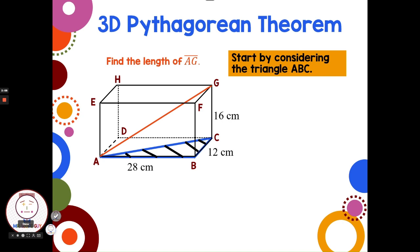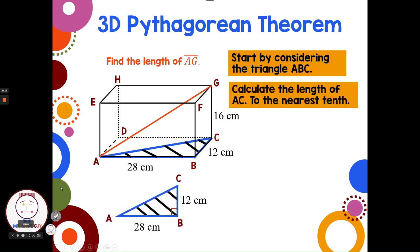I'm going to have to use the Pythagorean theorem two different times. So let's first look at this right triangle we have in the base with legs of 12 and 28. And if we flatten it out, it looks like this. We have a leg of 28, a leg of 12, and we're finding AC. We use the Pythagorean theorem. We start by writing a squared plus b squared equals c squared. Always good to write the formula to start these problems.